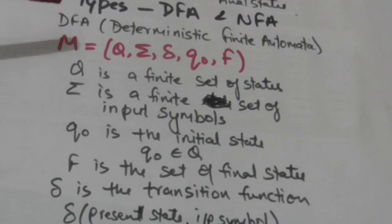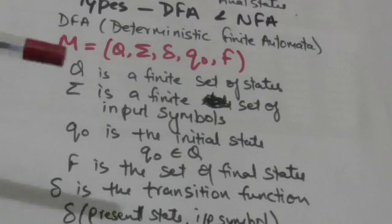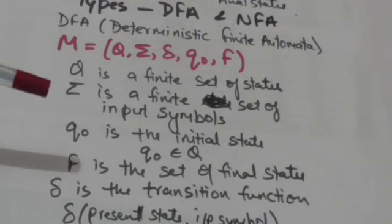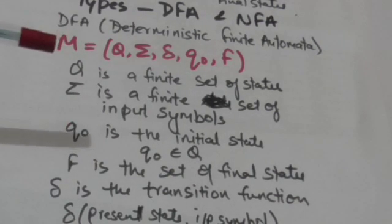q₀ is the initial state of DFA M. A finite automata must have only one initial state.